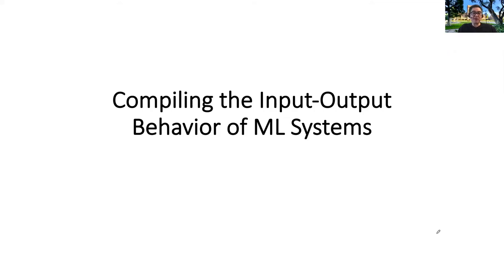Today we'll take a look at the process of doing that compilation in the context of three different machine learning systems: Bayesian network classifiers, a very limited type of neural networks, and decision trees and random forests. Each one of them brings its own challenges and subtleties, but that should give you a sense of what's really involved.